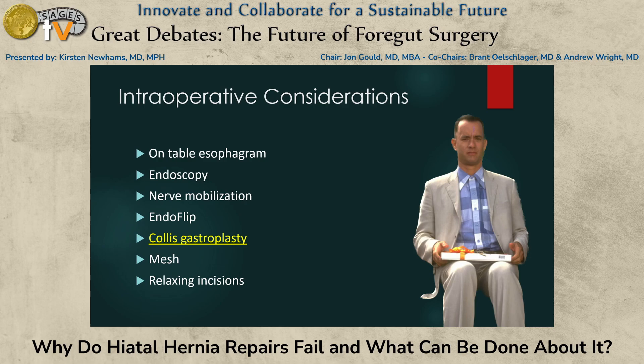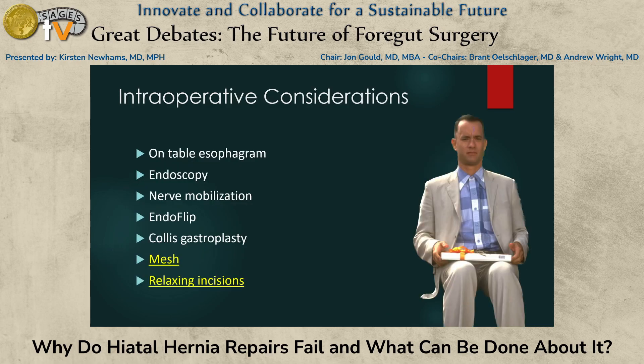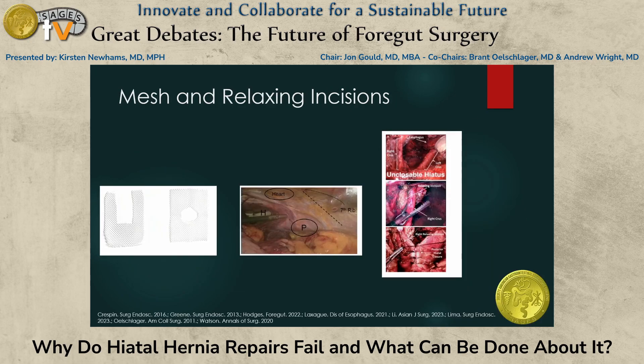Collis gastroplasty may need to be established to help facilitate intra-abdominal esophageal length. The reported incidence of gastroplasty use ranges from 0 to 60 percent, with dedicated foregut surgeons reporting need for a Collis in the range of 3 to 20 percent. Collis gastroplasty is a technique that should be considered when faced with a short esophagus while establishing a neo-esophagus — this is a compromise and is not physiologic; however, long-term data does show high patient satisfaction rates. Lastly, mesh and relaxing incisions are frequently discussed as intraoperative maneuvers to reduce recurrence rates, with results variable owing to variation in technique, mesh type, and the nature of follow-up.